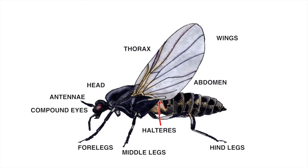The important mouthparts include the labium, which is modified to serve as a sponge. Other mouthparts include the labrum, maxilla, and the mandible. Although it is important to add that only the females bite.